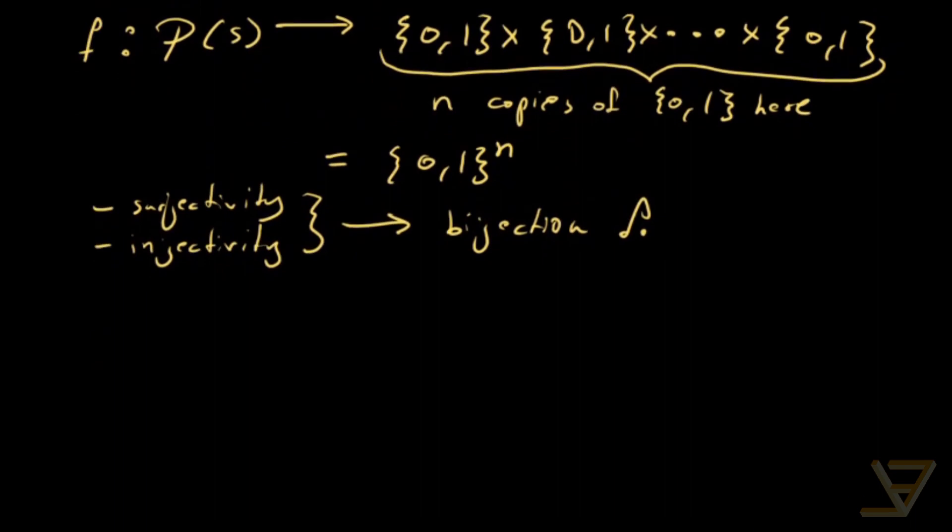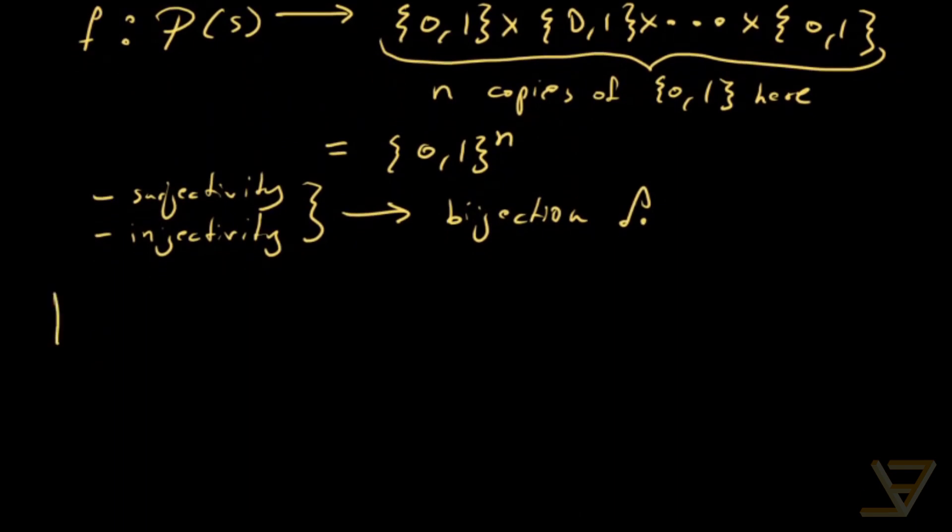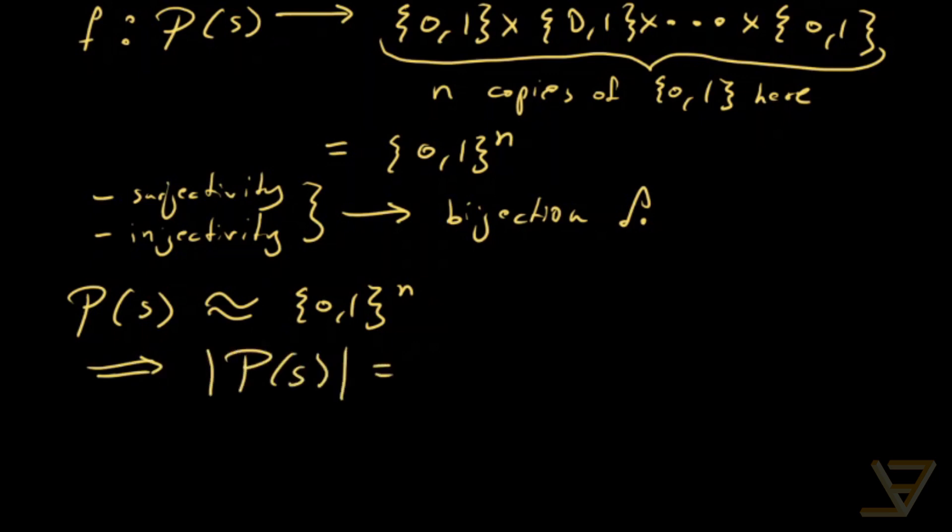And so by the bijection principle, this means that the power set of S is equiponent with {0, 1} to the n. By equiponent I mean there's a bijection between them. And so that means that the cardinality of the power set of S is equal to the cardinality of this n cross product. And that's just equal to the cardinality of {0, 1} to the n. And that's just 2 to the n. So that's the cardinality that we're seeking.